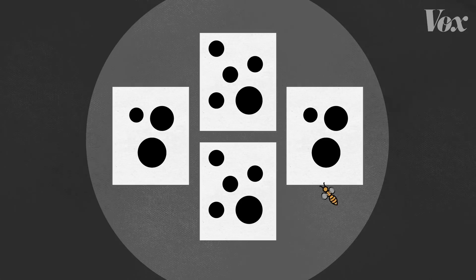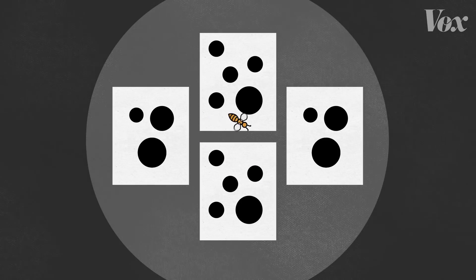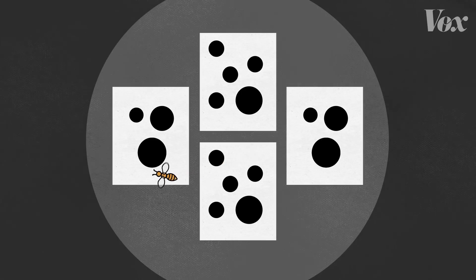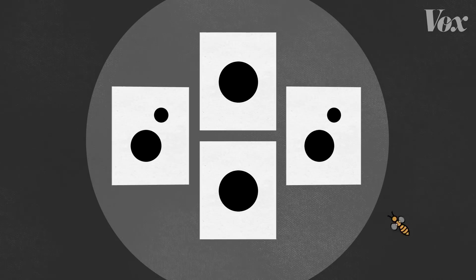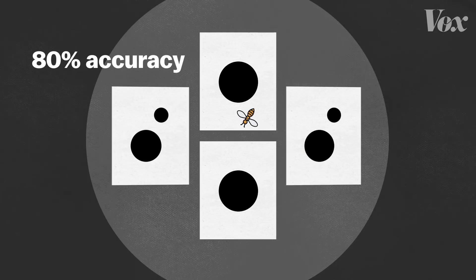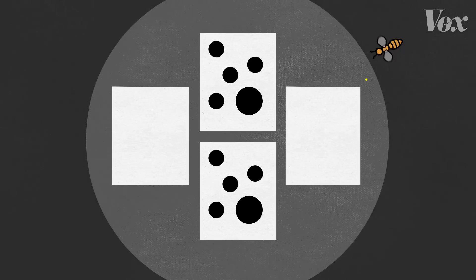In a study similar to the one done with the young kids, researchers presented bees with cards showing different numbers of dots. The bees were rewarded with sugar water when they selected the card with the smallest amount. After the bee correctly chose the smaller number 80% of the time, the researchers upped the challenge.